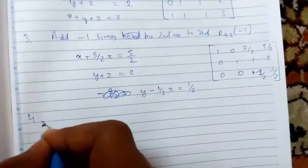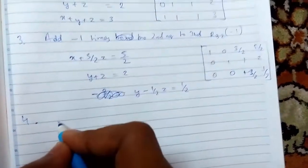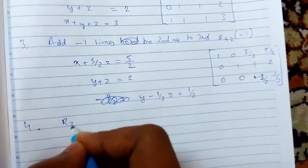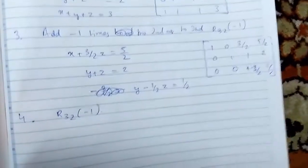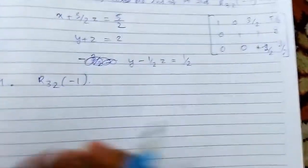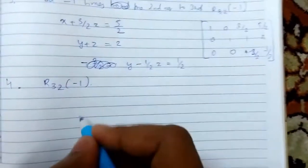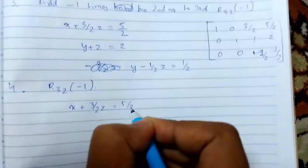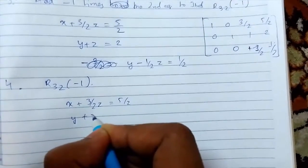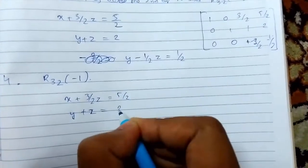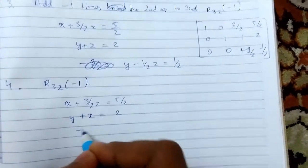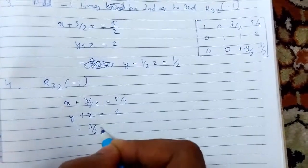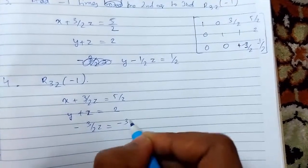Now what we can do more? Let us see. Again we can do this - we can add minus 1 times the second equation to the third. Our first equation remains unchanged again. Now we are just changing the third one. So this will be minus 3/2 Z and minus 3/2.